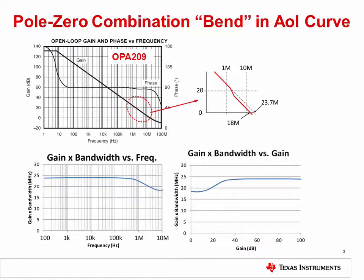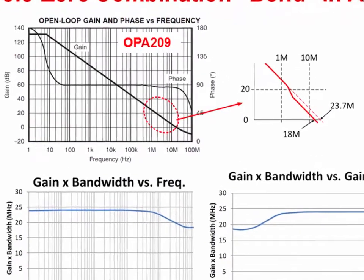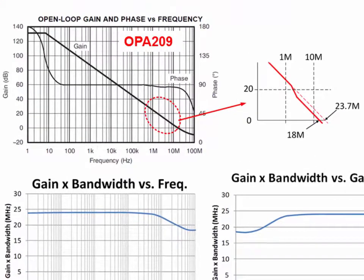Previously, we assumed that the open loop gain curve had a constant slope of minus 20 dB per decade. However, we find that there is a small bend in the AOL curve between 1 megahertz and 10 megahertz due to a pole zero pair. A pole near 1 megahertz causes the open loop gain to decrease faster than minus 20 dB per decade over a small range of frequency, but the pole is then quickly canceled by a zero. Due to the logarithmic scale, it is not possible to see this small bend in the AOL curve — in fact, the bend is probably smaller than the thickness of the line in the curve.